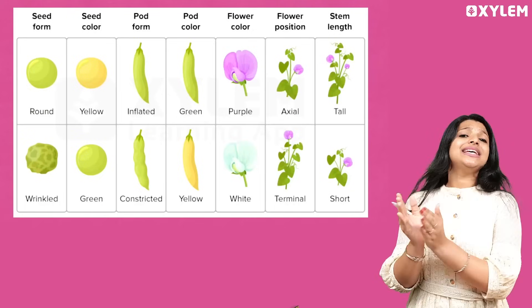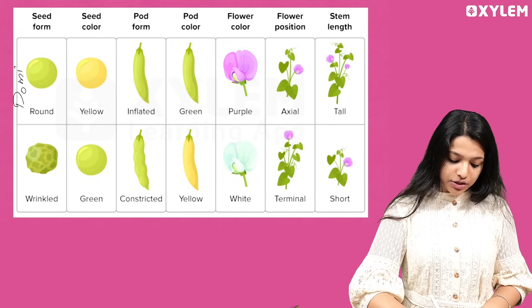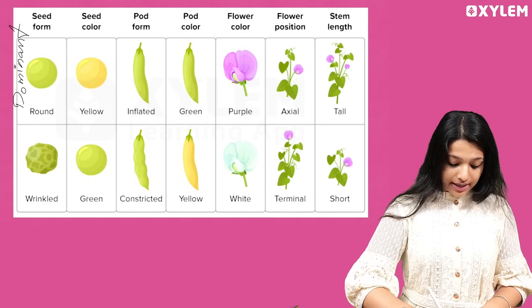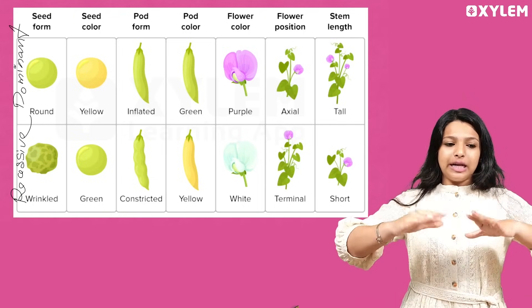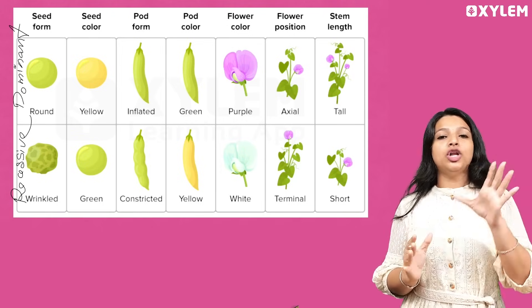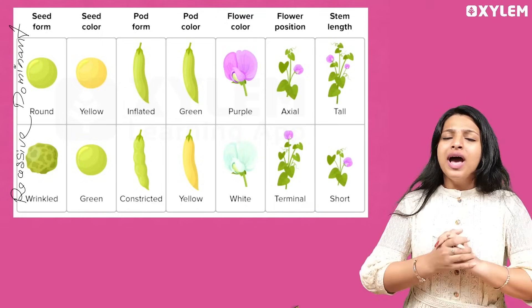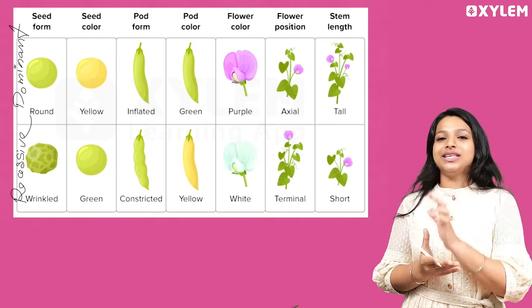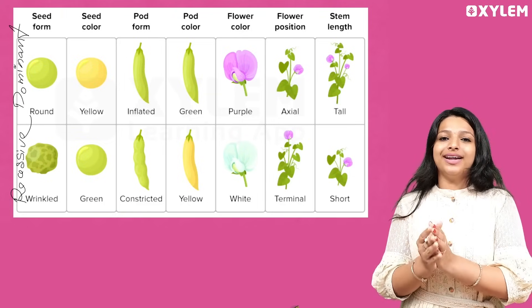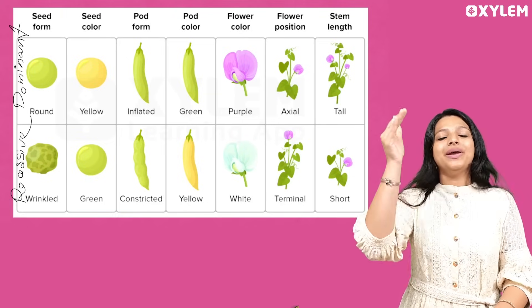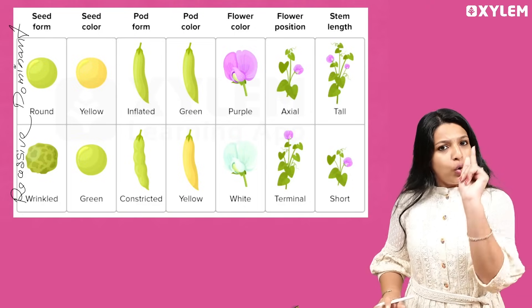Let's look at the characters. We call them dominant characters and recessive characters. A dominant character is expressed — it expresses one character. A recessive character is hidden. The different characters studied were: seed form, seed color, pod form, pod color, flower color, flower position, and height. These are the different physical characters studied.